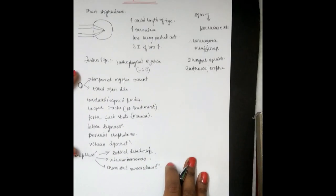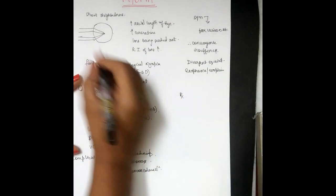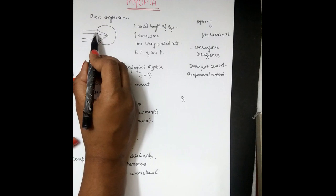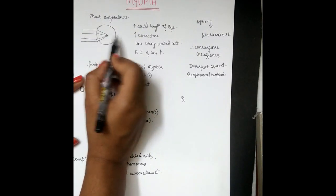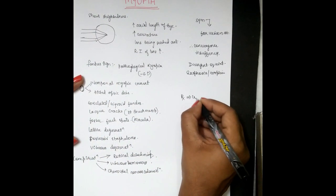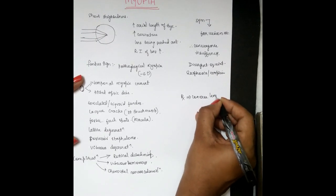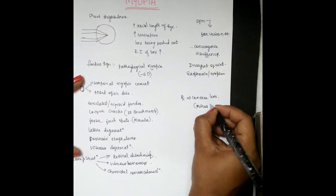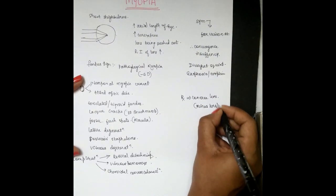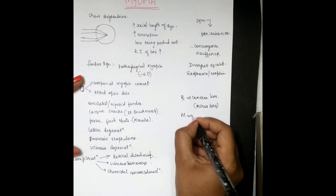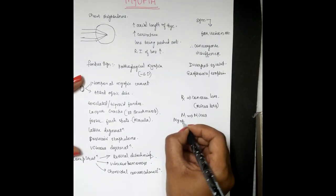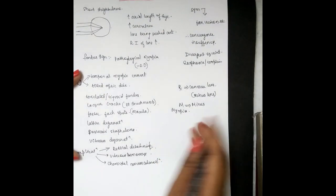Coming to the treatment aspect in myopia: the point of convergence is very much in front of the retina. To make it fall on the retina we have to diverge it, so we use a concave lens — that is a minus lens. Remember M for myopia, M for minus.